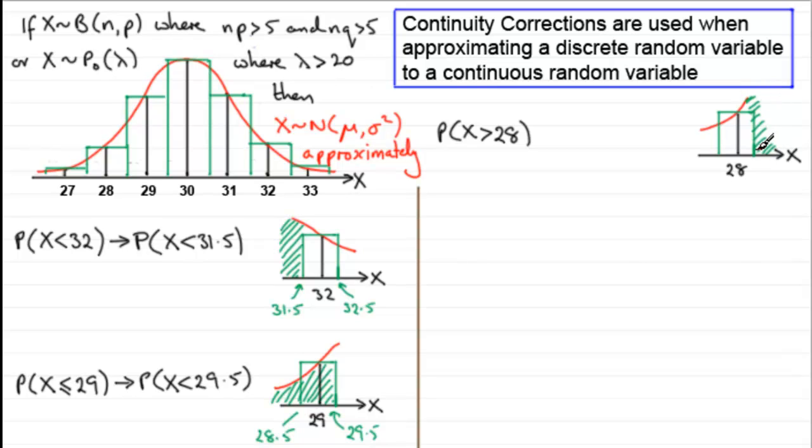So therefore, this value here is 28.5, and this one here is 27.5. So for us, making the continuity correction, we approximate this to working out the probability that X is greater than 28.5. So well done if you got that one right.